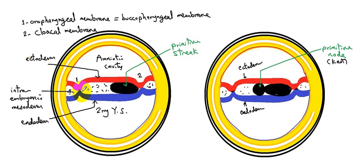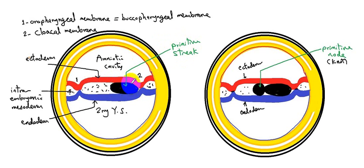At the cephalic end of the embryo, this is called the oropharyngeal membrane, and at the caudal end of the embryo, this is called the cloacal membrane. Between ectoderm and endoderm, this is the primitive streak, which is formed from epiblast cells and will form the mesoderm and endoderm. So the source of the mesoderm and endoderm is this primitive streak.